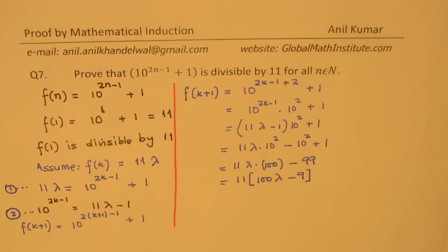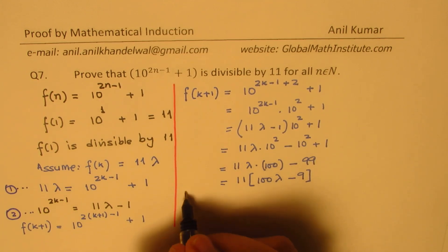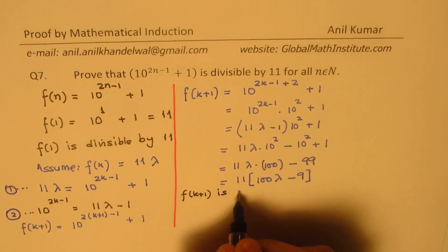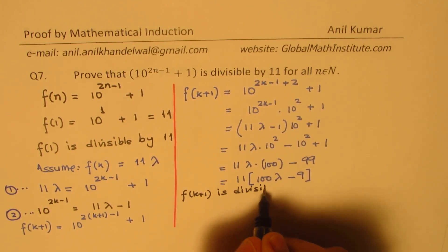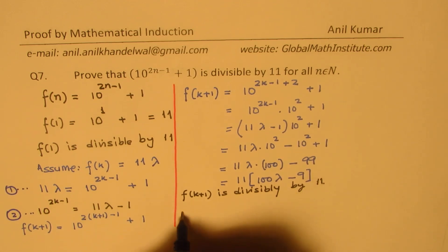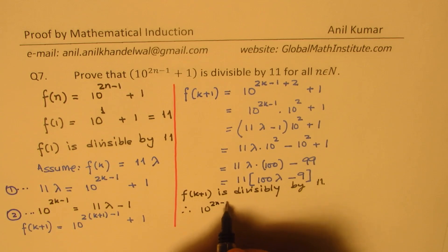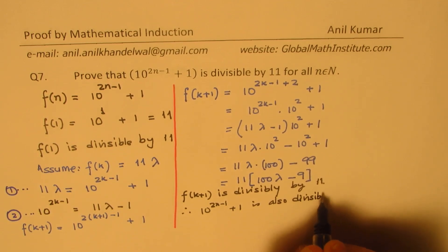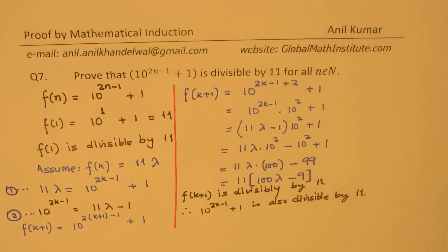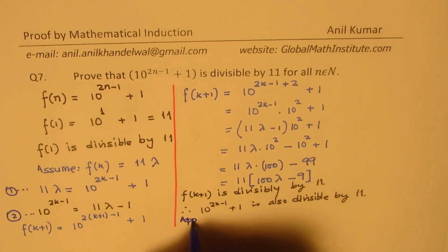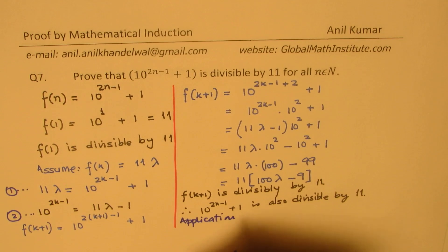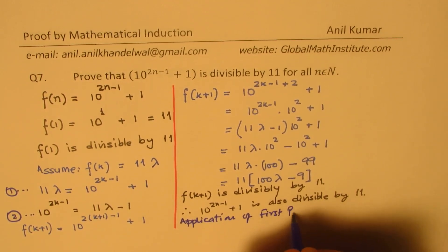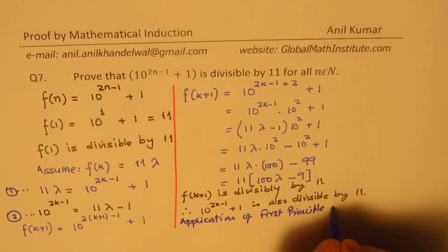Clearly, f(k+1) is a multiple of 11. So we can write that f(k+1) is divisible by 11. Therefore, 10 to the power of 2n minus 1 plus 1 is also divisible by 11, using the first principle of induction.